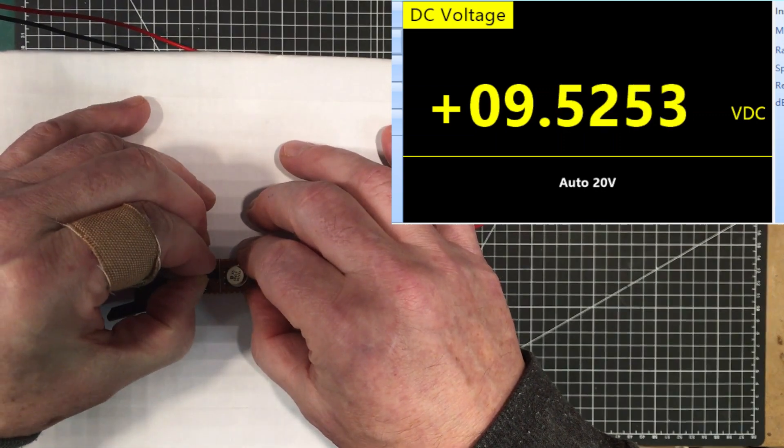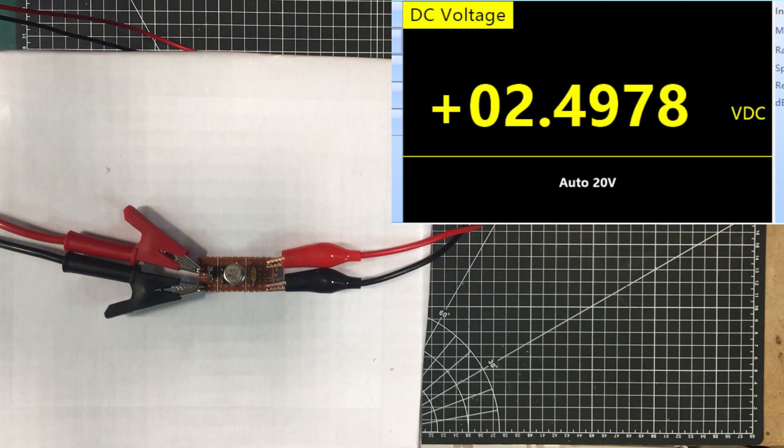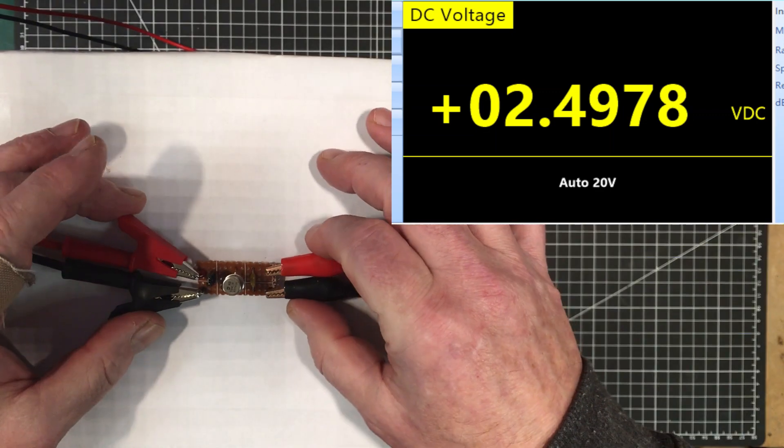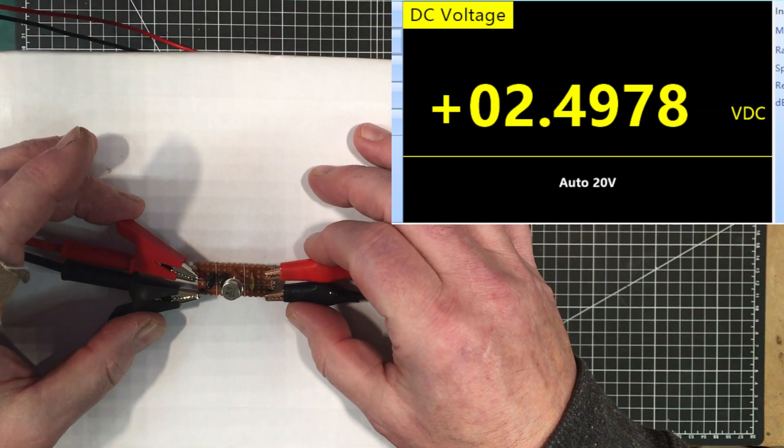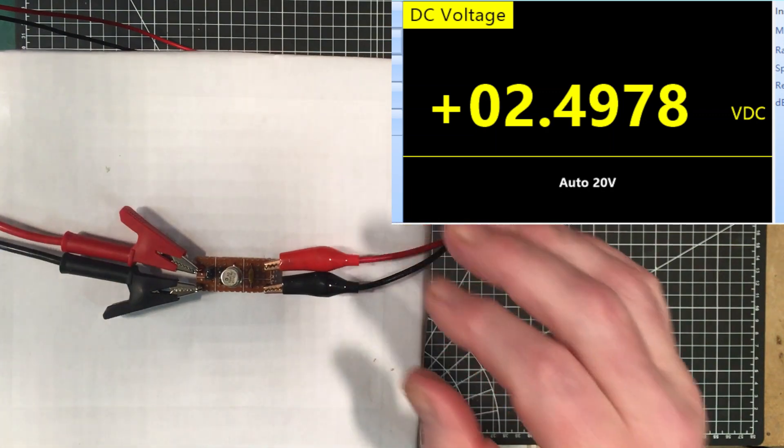Connect it up to this one here and this should be 2.5 volts plus or minus 2.5 millivolts, and it's off by 2.3 millivolts. So we're in specifications there too, nice device.